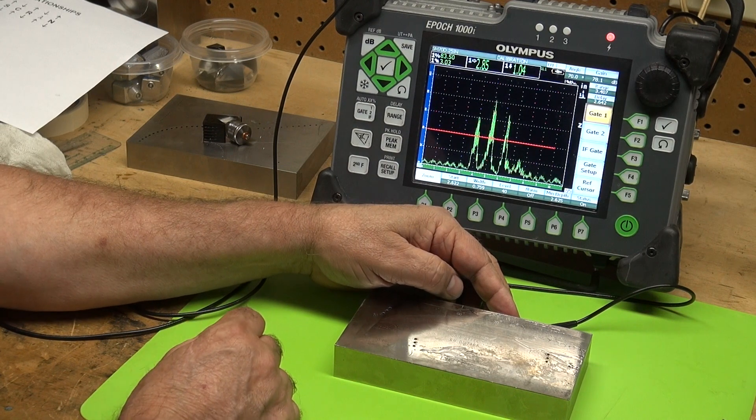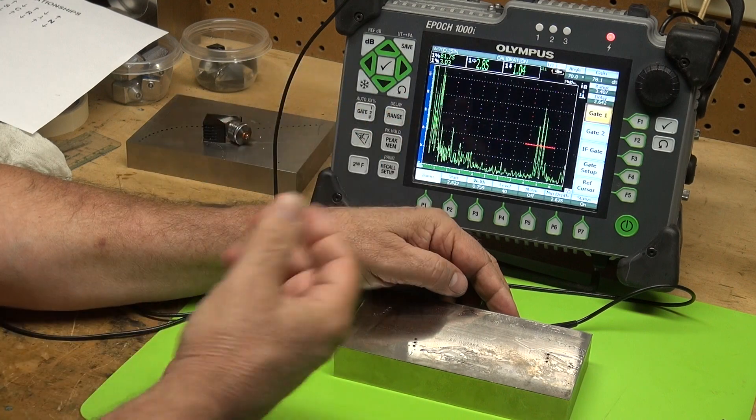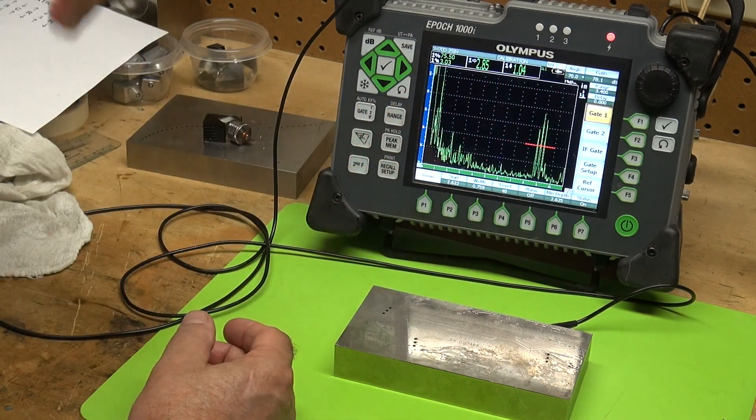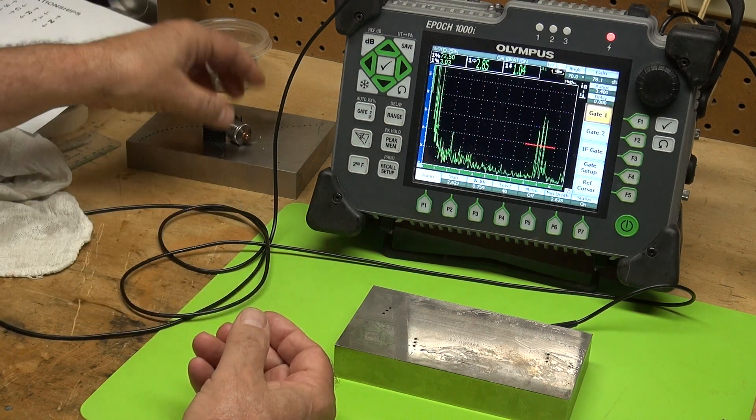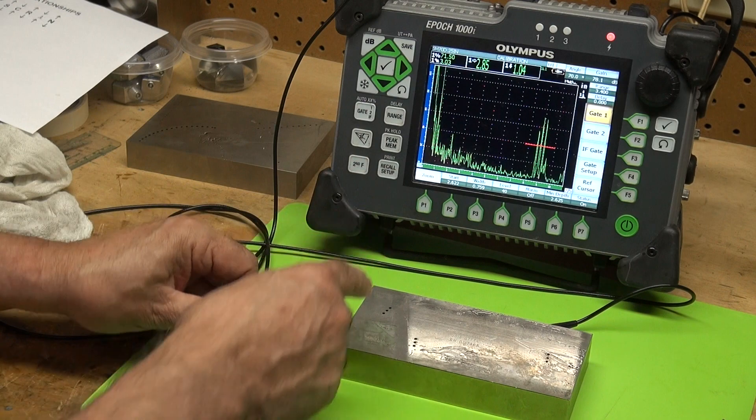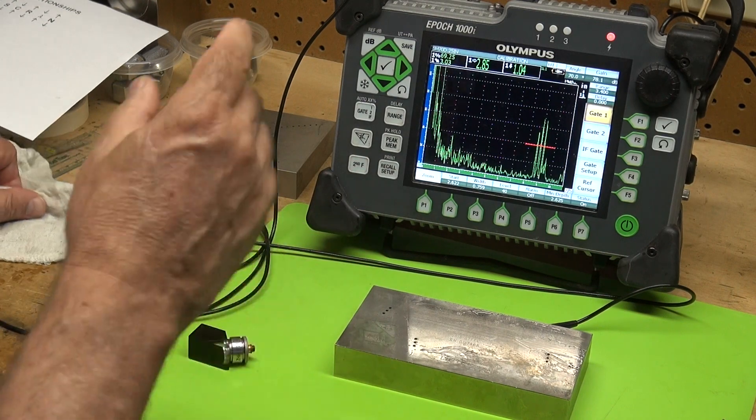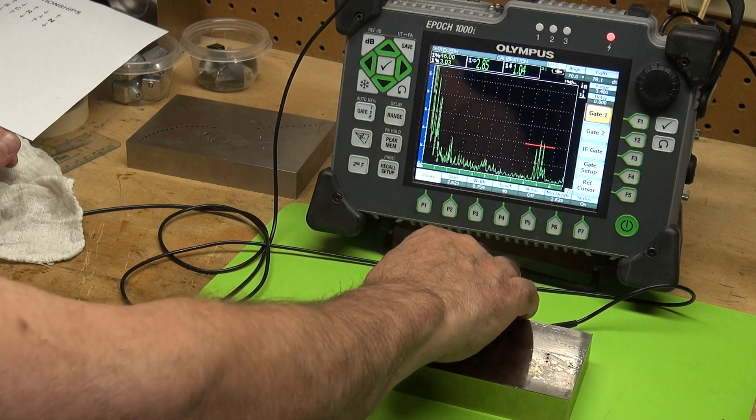Of course, there's always a tradeoff, but that's the way it is. The tradeoff is high frequency doesn't have the depth of penetration that a lower frequency like one and a half megahertz has. But this clearly demonstrates the effects that the frequency of your transducer has on the resolution of your defects.